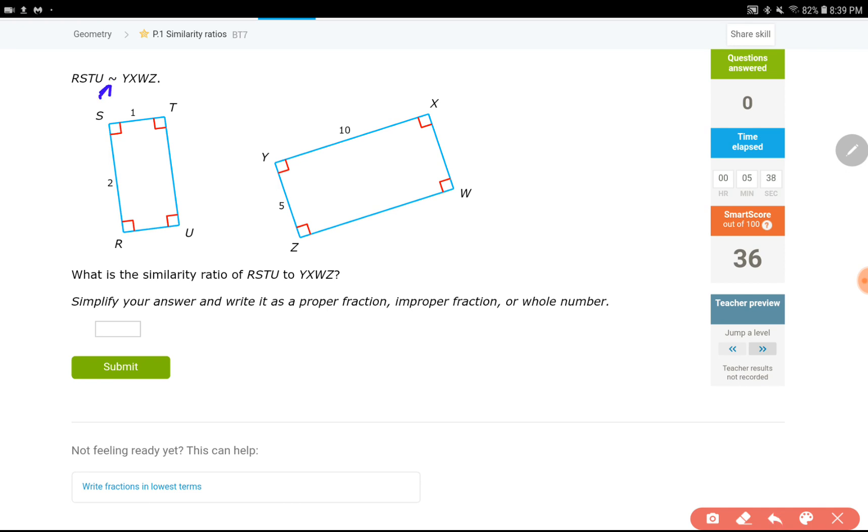And then our question is what's the ratio, similarity ratio, not scale factor, of RSTU of the first figure to the second one. So of the first figure to the second one, one is the shorter side of the rectangle, five is the shorter side of the rectangle. So these two correspond to each other. One way to write this is one over five.